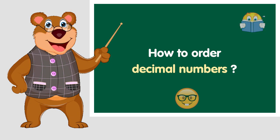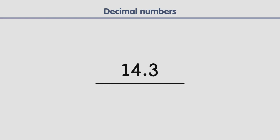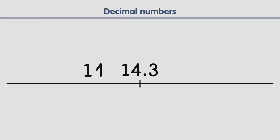Today we are going to learn how to order decimal numbers. Decimal numbers are numbers that are in between whole numbers. An example of this is 14.3, which is a number that is in between 14 and 15. 14.3 is greater than 14, but less than 15.